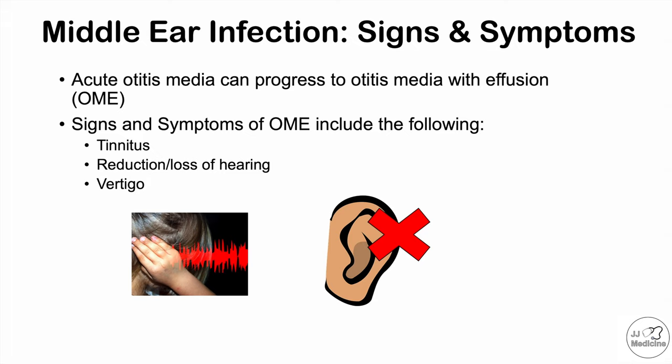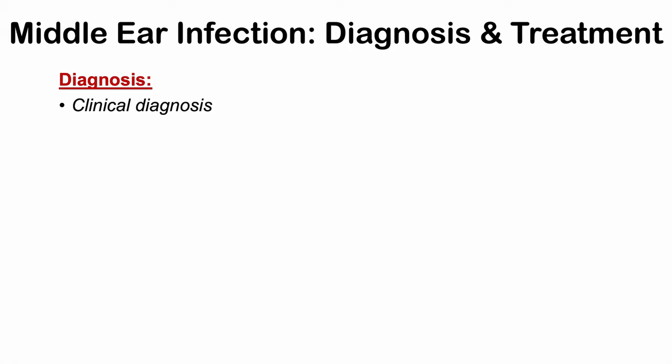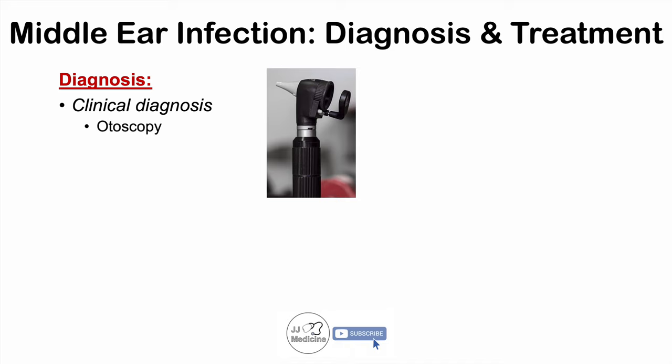Patients with OME often have a very severe or worsened otalgia in addition to the previously mentioned symptoms. Now let's talk about the diagnosis and treatment of middle ear infections. The diagnosis is a clinical diagnosis, made from the history and physical examination. This is done using otoscopy — clinicians use an otoscope to look inside the ear and examine the eardrum.